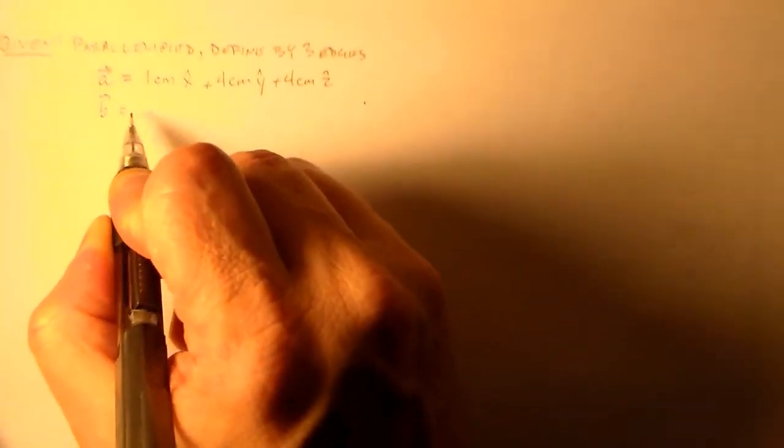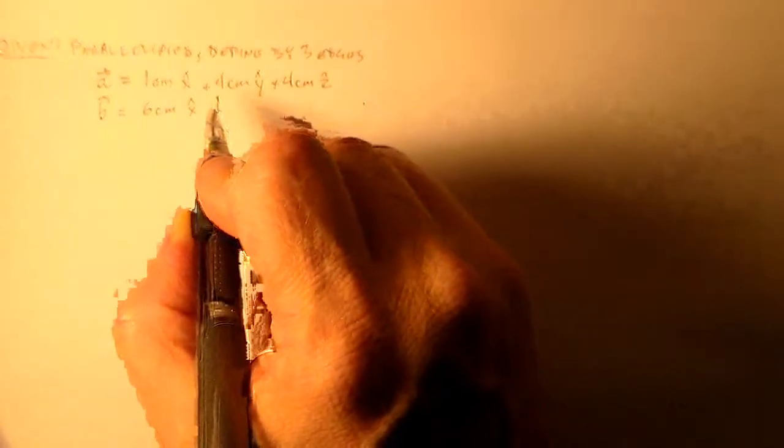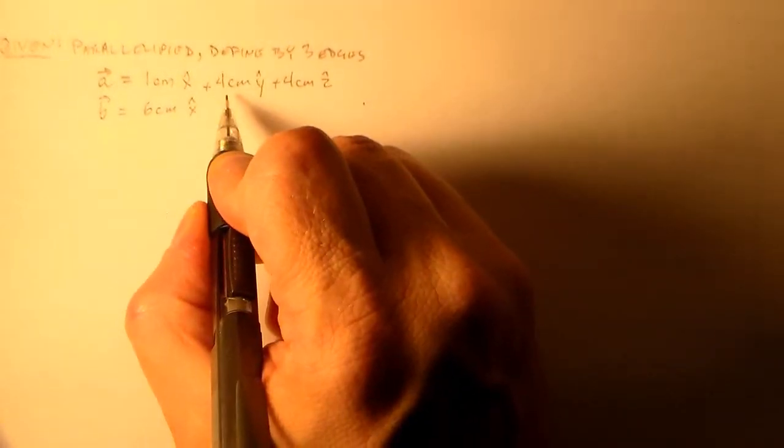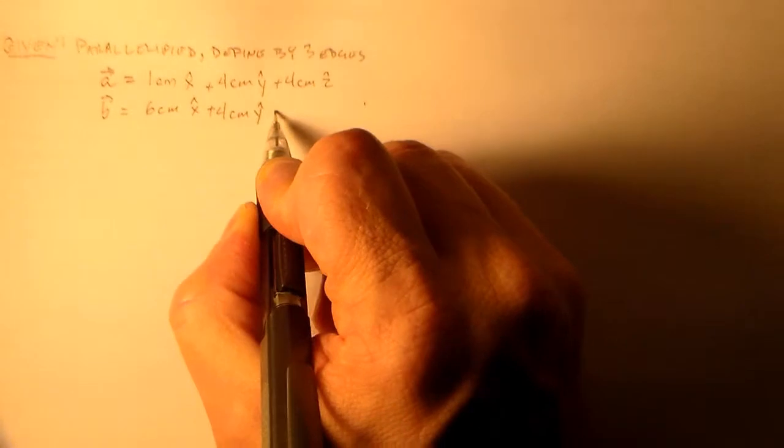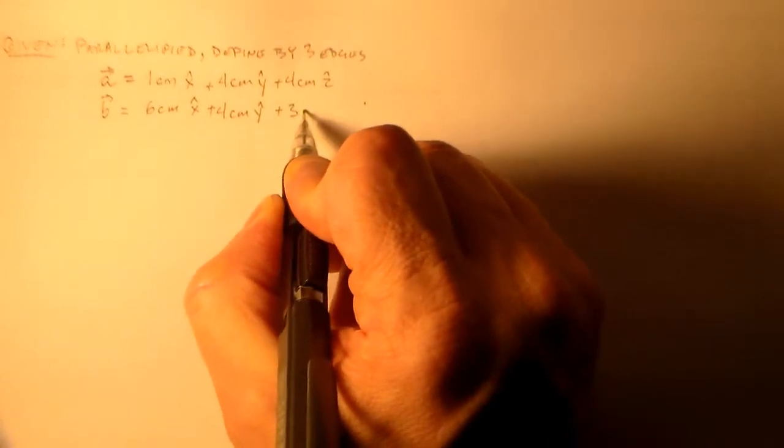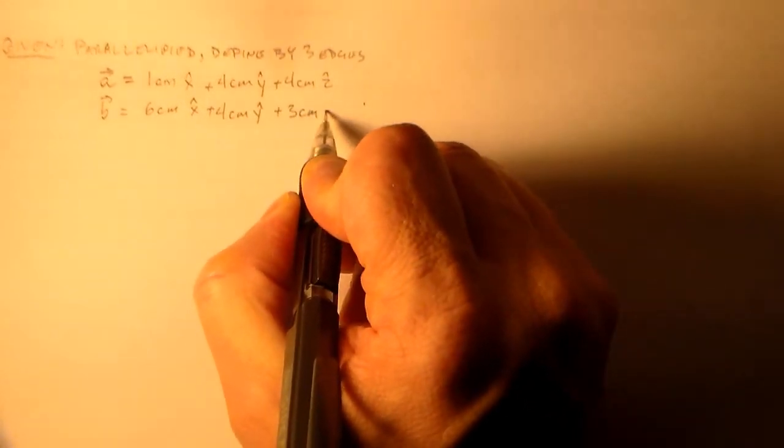That's looking good. Vector B has six centimeters in the x direction, four centimeters in the y direction, and three centimeters in the z direction.